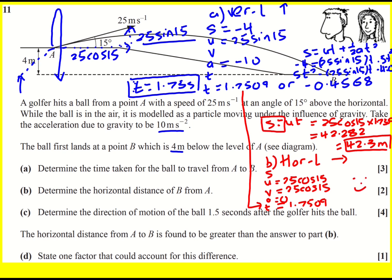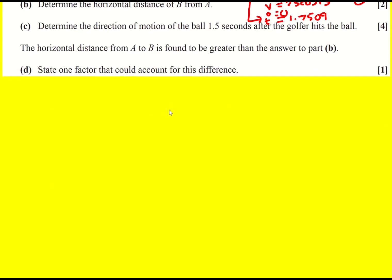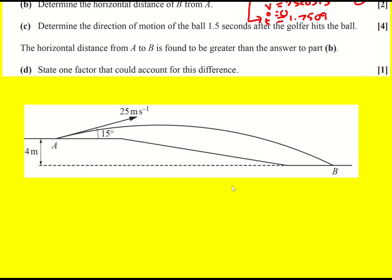We're asked to determine the direction of motion 1.5 seconds after the golfer hits the ball. So I've again got my vertical and horizontal parts. 1.5 seconds after the golfer hits the ball, it took 1.75 to hit the ground. So maybe it's around here. The direction of motion. So I know what I'll do. I'll draw a triangle like this. And that is going to be my direction of motion at that point below the horizontal. So what I need to be able to do is find my horizontal and vertical velocities at that point, draw a little triangle, and then I could find the overall speed. And actually, what we want is the direction of motion here.